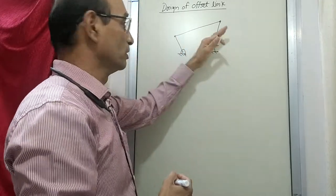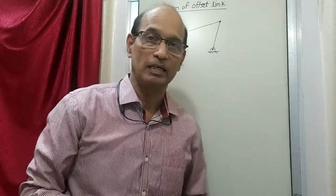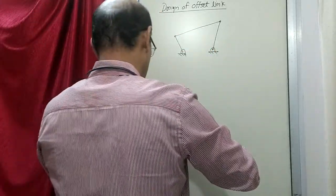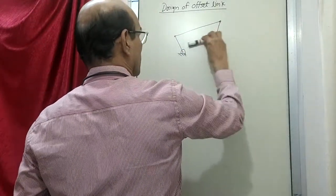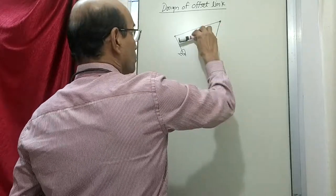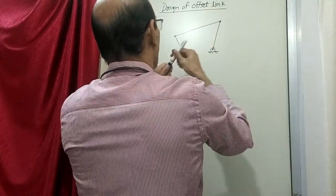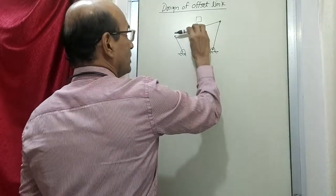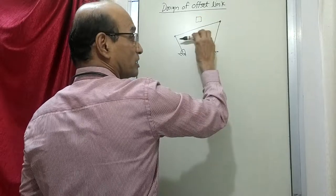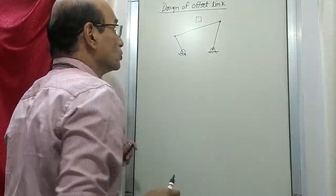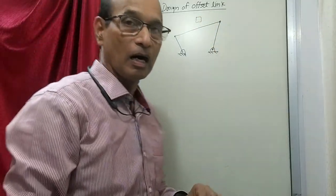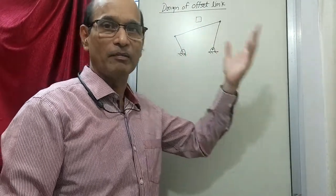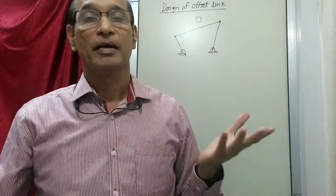When these links perform motion, sometimes it happens that there is a chance of some kind of obstruction. Suppose this link is performing such kind of action during its working, and suppose there is some object here. Then there is a chance that it might just get obstructed by that object while its motion is taking place. So what is done is, the link is modified. It can be modified in many ways as you have seen in the case of expansion of a link.